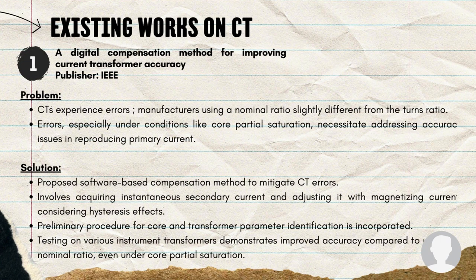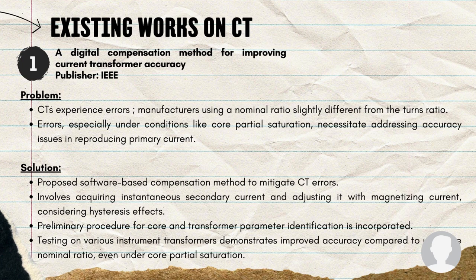A problem and solution identified from the research: CTs experience errors despite manufacturers using a nominal ratio slightly different from the turns ratio — errors especially under conditions like core partial saturation and in reproducing primary current. The proposed solution is a software-based compensation method to mitigate CT errors. It involves acquiring instantaneous secondary current and adjusting it with magnetizing current, considering hysteresis effects.